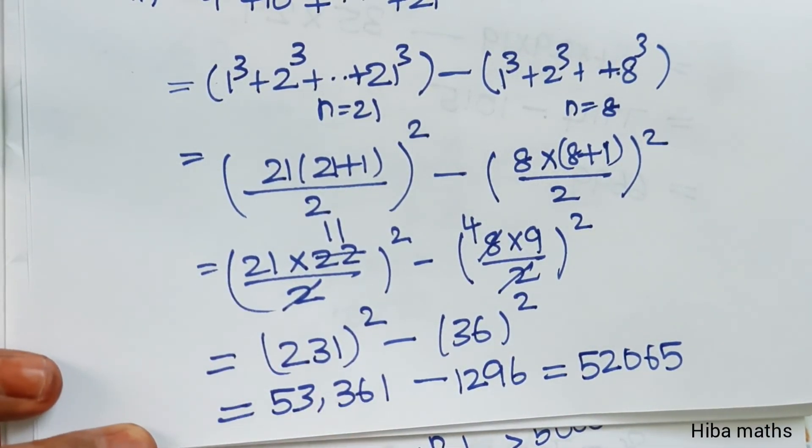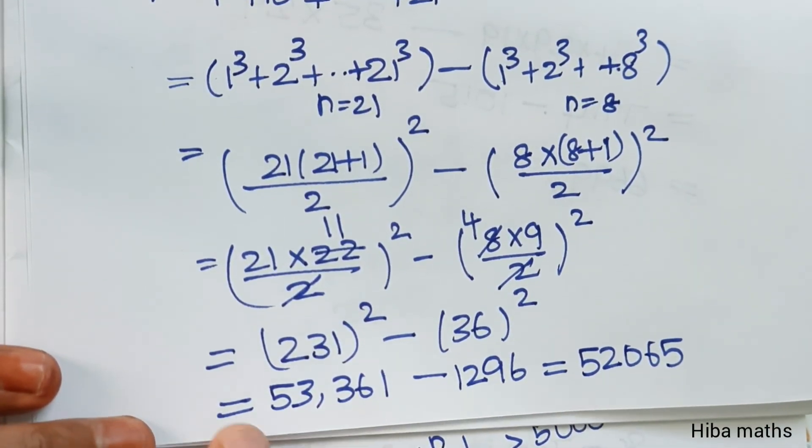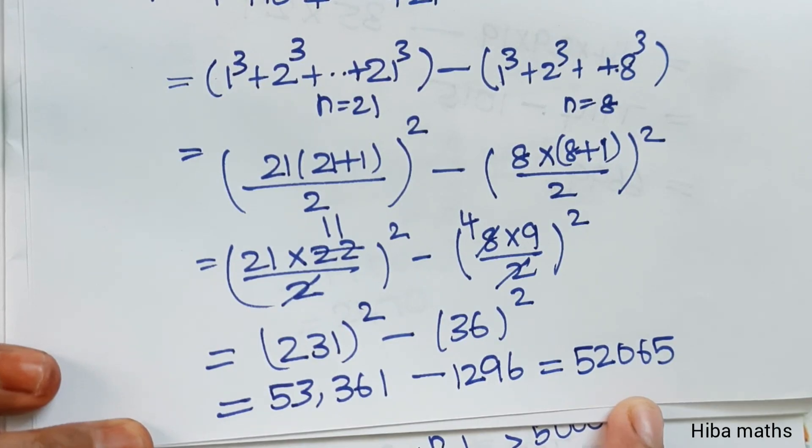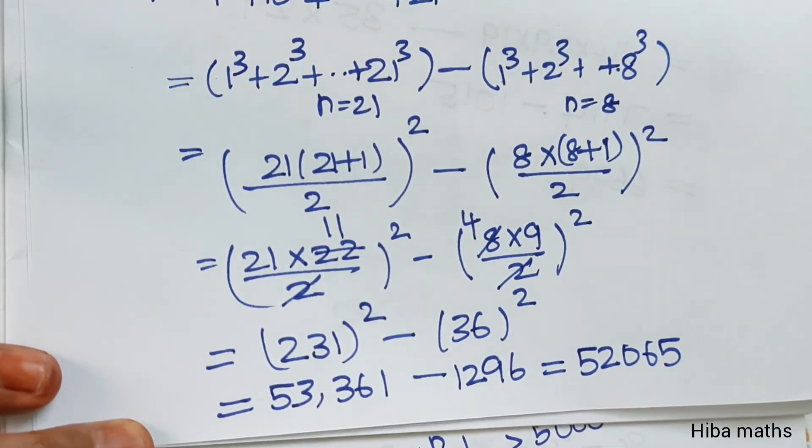So the final answer is 52,065. Multiply and solve carefully to check the answer correctly. Thank you so much for watching.